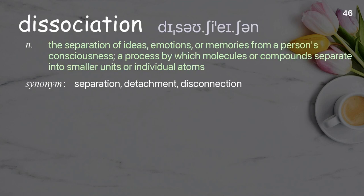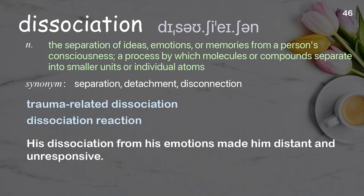Dissociation: the separation of ideas, emotions, or memories from a person's consciousness; a process by which molecules or compounds separate into smaller units or individual atoms. Examples: trauma-related dissociation, dissociation reaction. His dissociation from his emotions made him distant and unresponsive.